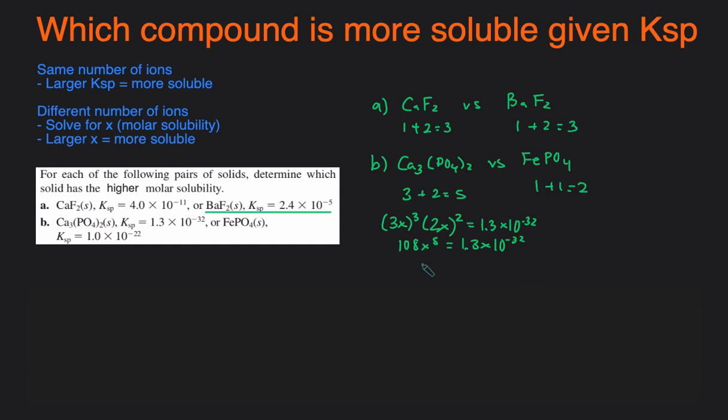We do the same thing for the iron 3-phosphate. We have one iron, that's just going to be X, and one phosphate, so that's also X. So this would be X squared equals the Ksp of iron 3-phosphate, which is 1.0 times 10 to the negative 22. And then we just take the square root of both sides to solve for X, and that gives you X equals 1.0 times 10 to the negative 11.